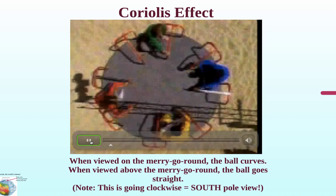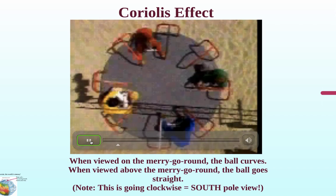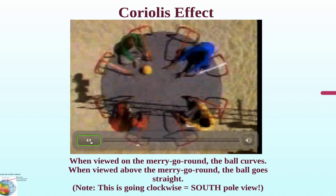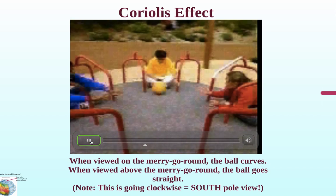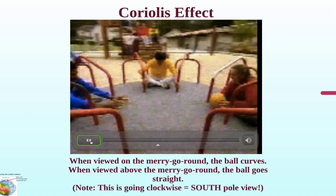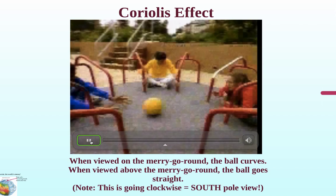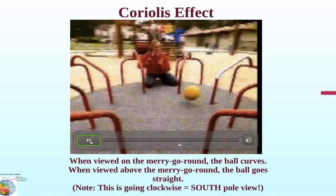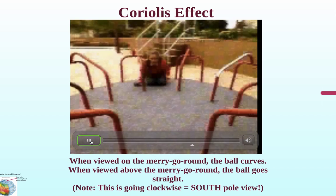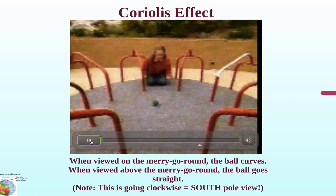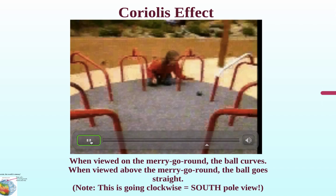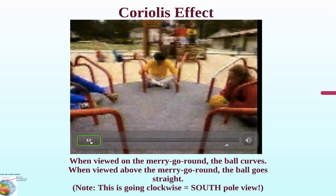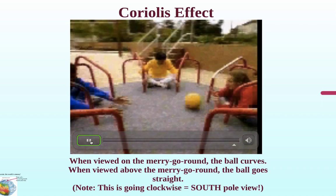To an observer above the merry-go-round, the path of the ball appears straight. While to someone sitting on it, the ball appears to curve to the left. This exemplifies the Coriolis force, whereby to an observer on the rotating Earth, the path of an object appears to be deflected — and this is a result of the Earth's rotation.